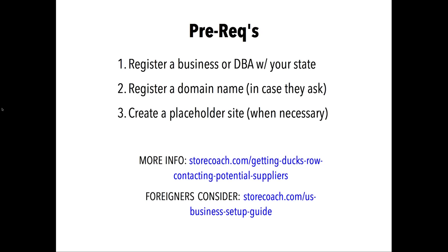It's challenging to make training on this because it's so different case by case and you have to make judgment calls. In the past when we were learning, we'd apply, get rejected, get our ducks in a row, apply again — sometimes get rejected and get more prepped and apply again and get accepted. Or we'd create an affiliate site or content advertising site, get our traffic level up, and if they haven't come to us by then, we approach them.